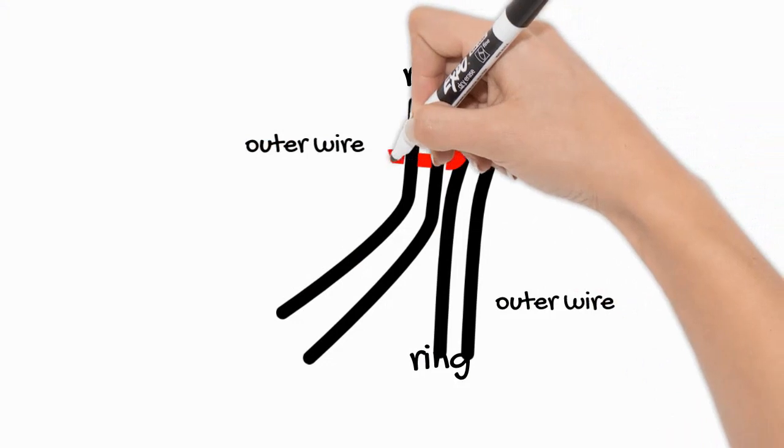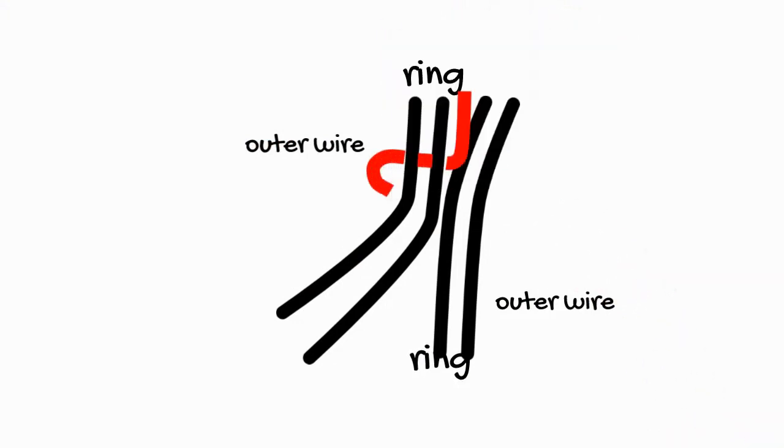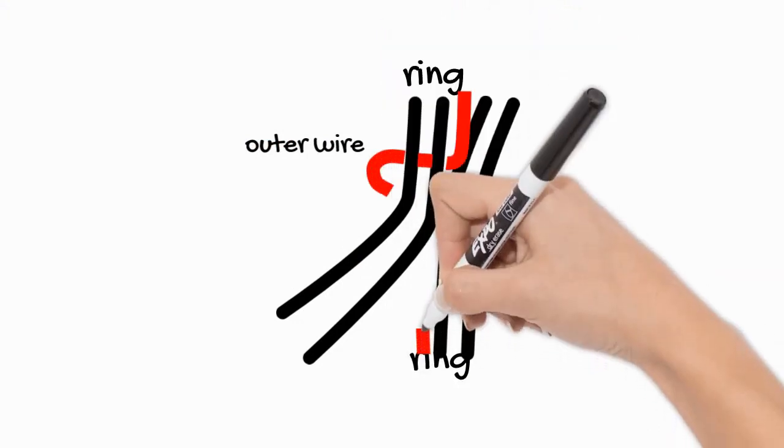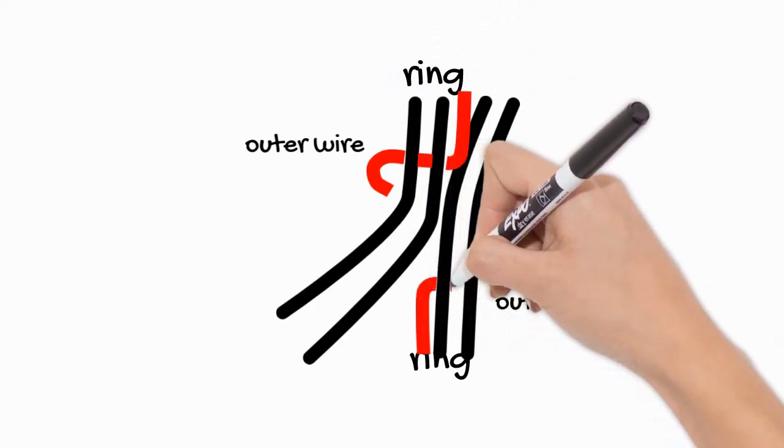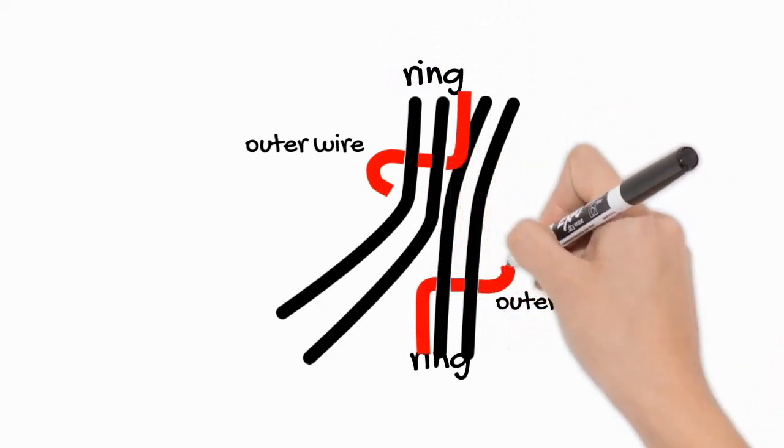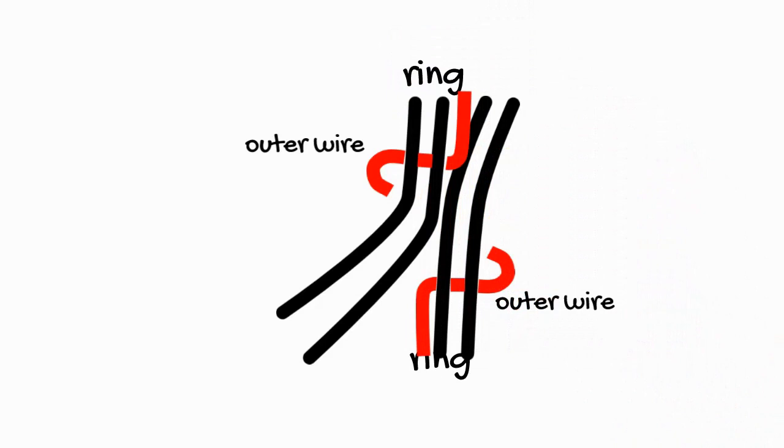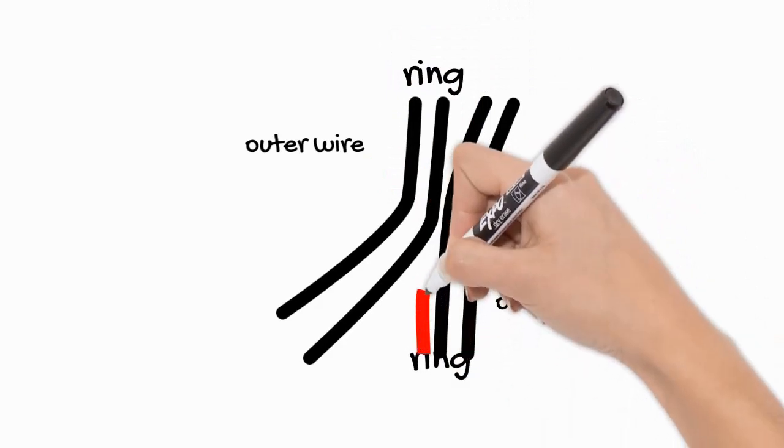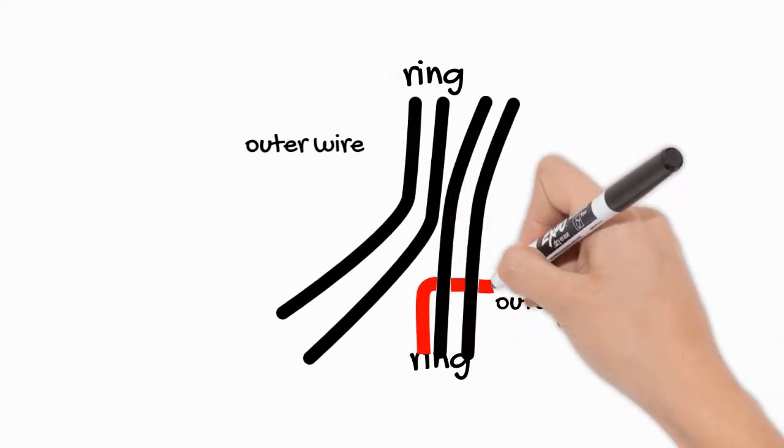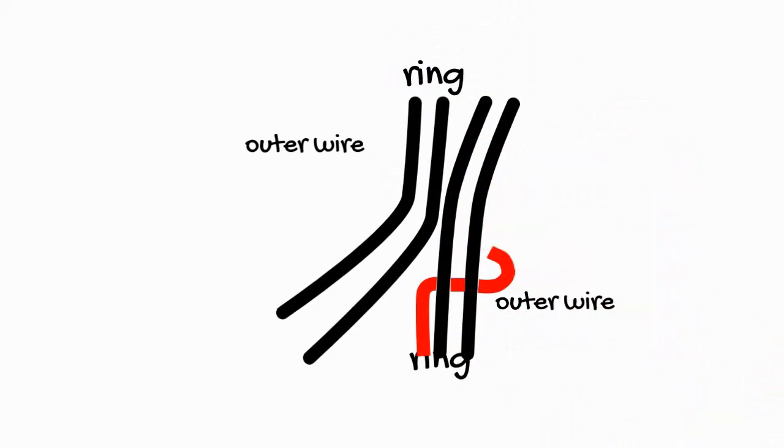First, put the inner wire underneath and to the side. As you can see, like how I'm drawing now, it's underneath. Next, with the one inner wire, wrap around all four wires.